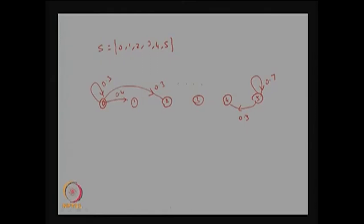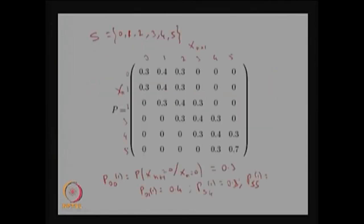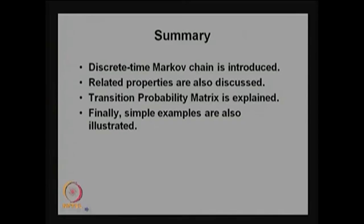The state transition diagram has nodes 0, 1, 2, 3, 4, and 5, with arcs drawn only where transition probabilities are positive. We must fill up all arcs with weights going from one state to another; wherever the probability is 0 we do not draw the arc. In this lecture we have discussed the discrete time Markov chain, given important properties, explained the one-step transition probability matrix, and provided two simple examples. This concludes lecture one for module 4.